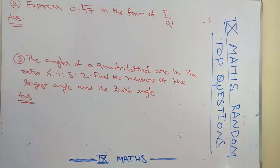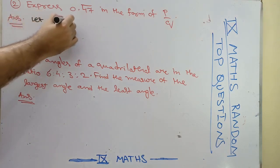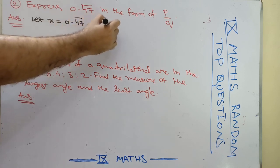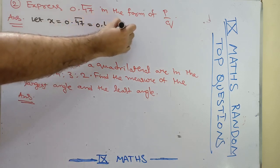Here I am going to do it with a simple technique. So let x is equal to 0.47 bar. This can be written as 0.4747 bar.